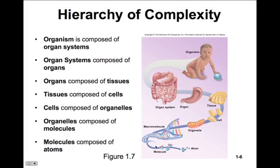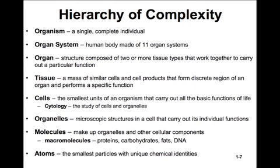For example, water is H2O — made up of two atoms of hydrogen and one atom of oxygen. All these molecules come together to form larger and larger entities. An organism is a single and complete individual. There are 11 organ systems in the human body. An organ itself is composed of two or more tissue types that work together to carry out particular functions. A tissue is a mass of similar cells and cell products that forms discrete regions of an organ and performs a specific function.